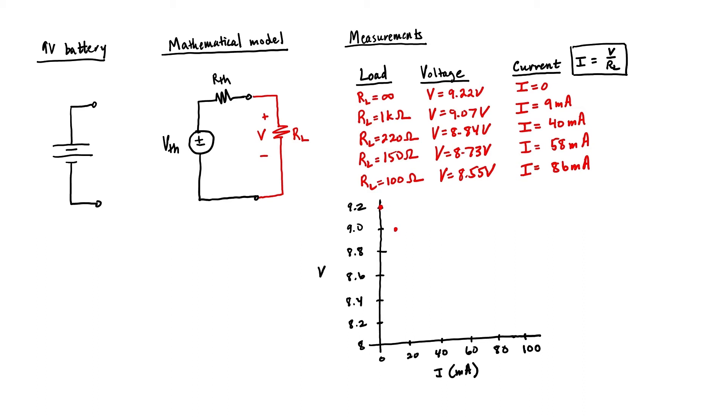We then measured 9 milliamps, then 40 milliamps, then 58 milliamps, and finally 86 milliamps. What you notice is that we have something that looks almost like a linear relationship between voltage and current. Let's go ahead and plot this in a more rigorous way so that this relationship is clear.